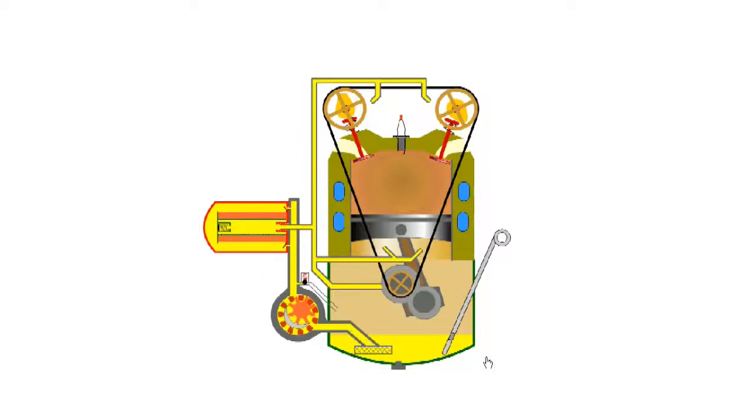So far we have described a wet sump which is used on most road cars. The sump is located at the bottom of the engine, the design is simple, and the oil is stored close to where it is needed.